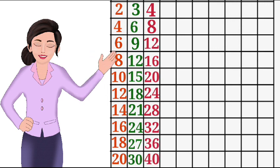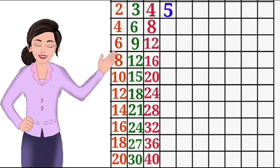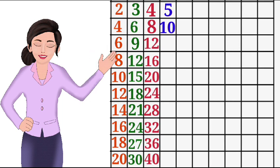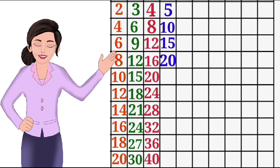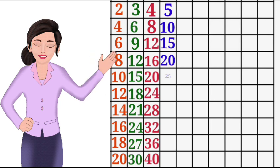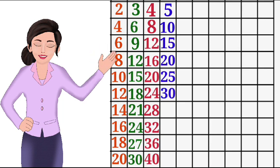5-1 the 5, 5-2 the 10, 5-3 the 15, 5-4 the 20, 5-5 the 25, 5-6 the 30.